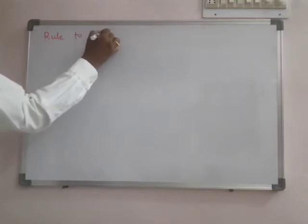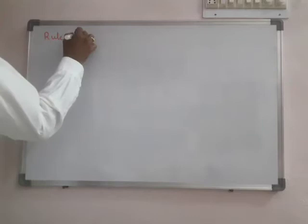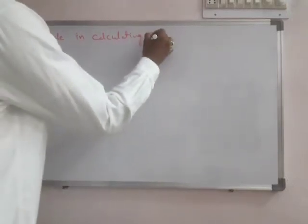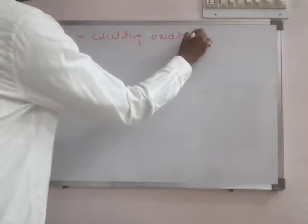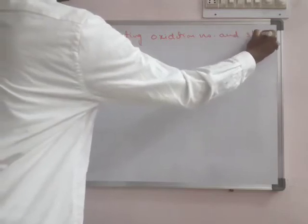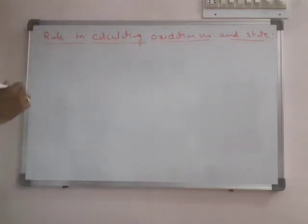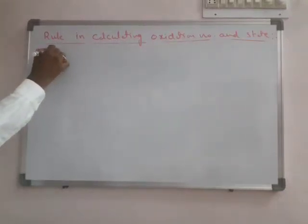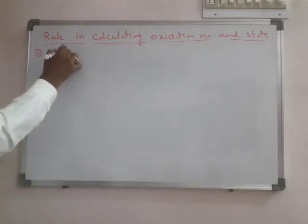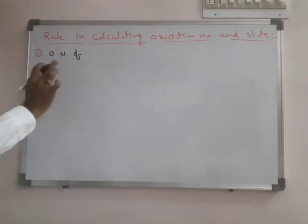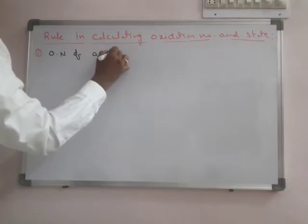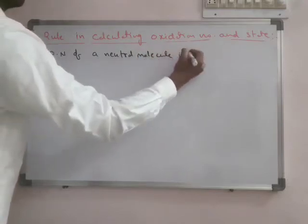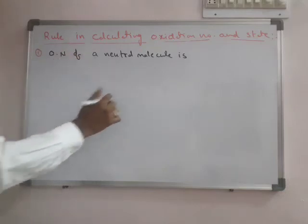Now we see the rules for calculating oxidation number and state — both are essentially equal. The first rule: the oxidation number of a neutral molecule is always zero.